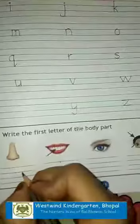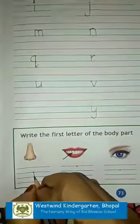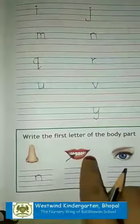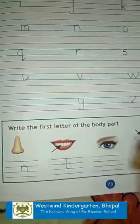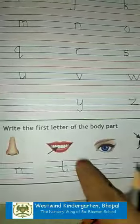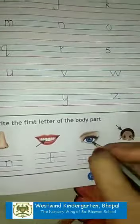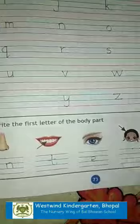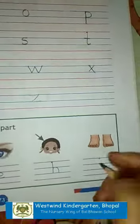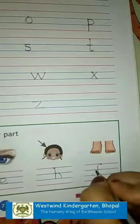Write the first letter of the body part. What is this? Nose. We are going to write N, using two lines. Then teeth, T, we are going to write. Starting from the first red line, goes till second blue line. Then ear, E, we are going to write. Then hair, H, we are going to write. Then feet, F, we are going to write like this.